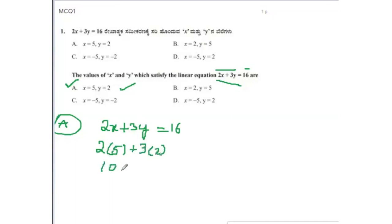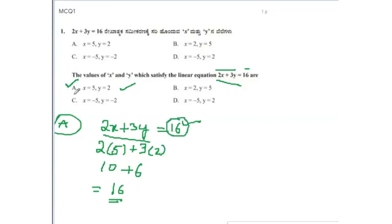2 fives are 10 and 3 twos are 6. So 10 + 6 = 16, which equals the RHS. The LHS equals the RHS, so option A satisfies 2x + 3y = 16. Therefore the correct option is A. Let us also check option B to confirm.